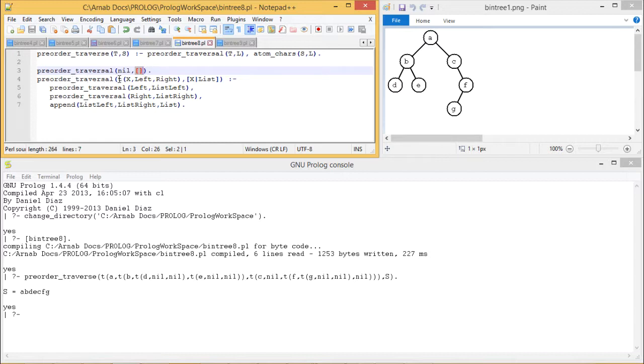Pre-order traversal T, X, left, right. So T is the tree, that is the structure name and X is the root, left and right are the variables to denote the left subtree and right subtree, left child and right child in this case. It will produce this X list as output because X will be coming at first because we know that the root will be coming at first and this list will be formed.